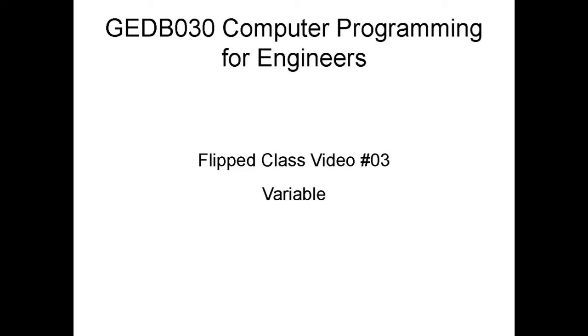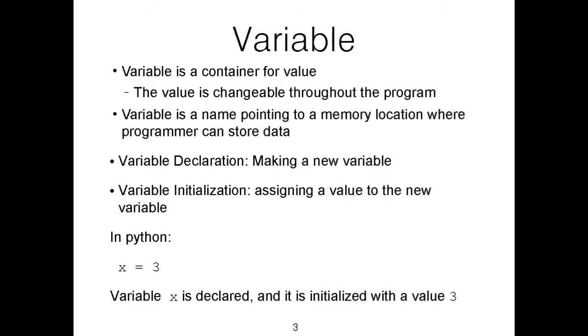This is flipped class video number three. In this video we'll talk about various concepts related to variable. A variable is basically a container of a value, and this value is changeable — you can change the value of a variable throughout the program. Technically speaking, a variable is a name pointing to a memory location, and the programmer can store and change the value of that memory location.